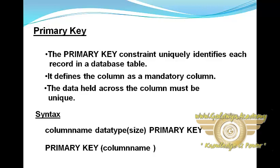The primary key column in a table has special attributes. First, it defines the column as a mandatory column — that means the column cannot be left blank. Second, the data held across the column must be unique.